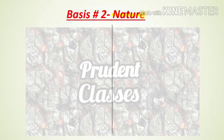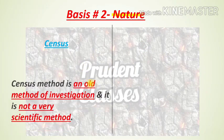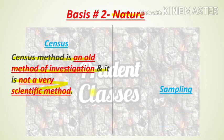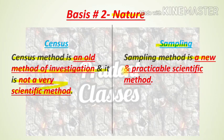Basis number 2 is the nature of census and sampling. The census method is an old method of investigation and it is not a very scientific method — it is quite a full or traditional method, as seen in population census where we do a population count. On the other hand, sampling is a new and practicable scientific method where we choose a particular population sample.